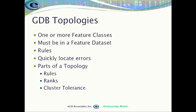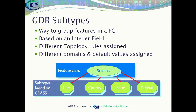Those are the different parts of the topology. Now we're going to start talking about attribute validation subtypes. What we use a subtype for is to create subgroups within a single feature class. We do that because the default attribute values for different types of data within the feature class may be different. For example, a feature class called Streets might be broken down into city street, county street, state highway, or federally maintained highway.